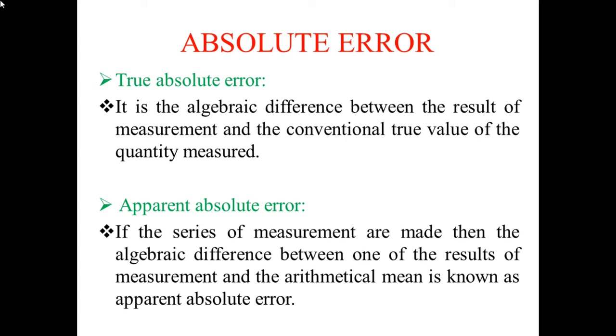The second type is apparent absolute error. If a series of measurements are made, then the algebraic difference between one of the results of measurement and the arithmetical mean is known as apparent absolute error.